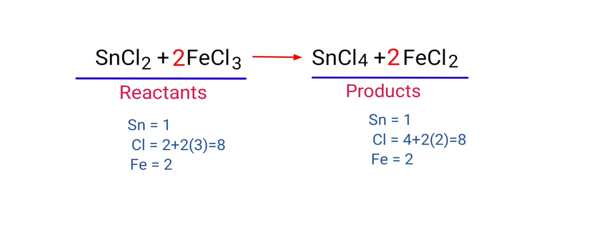The equation is now balanced. There is 1 Tin atom, 8 Chlorine atoms, and 2 Iron atoms on both sides.